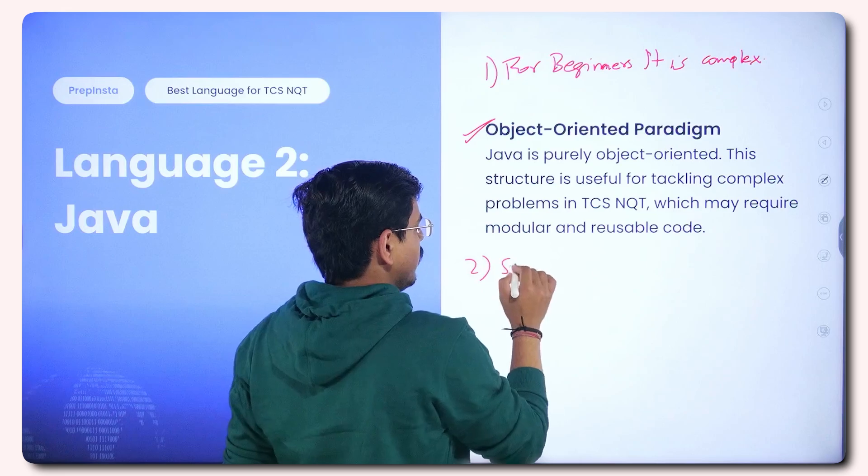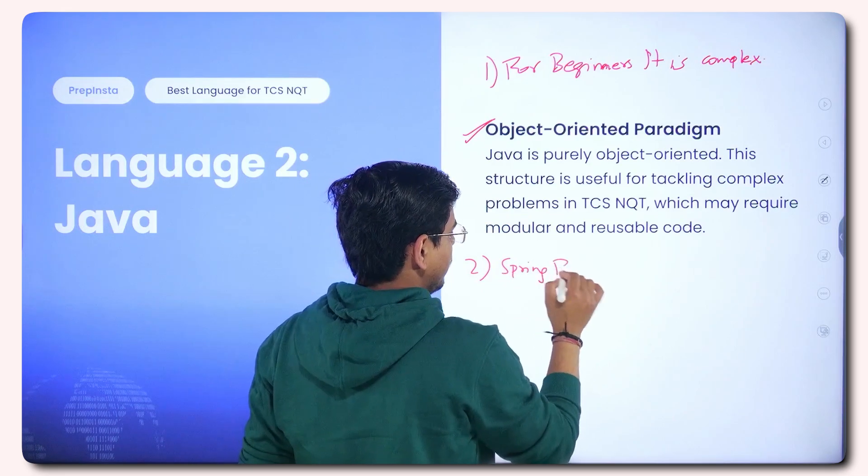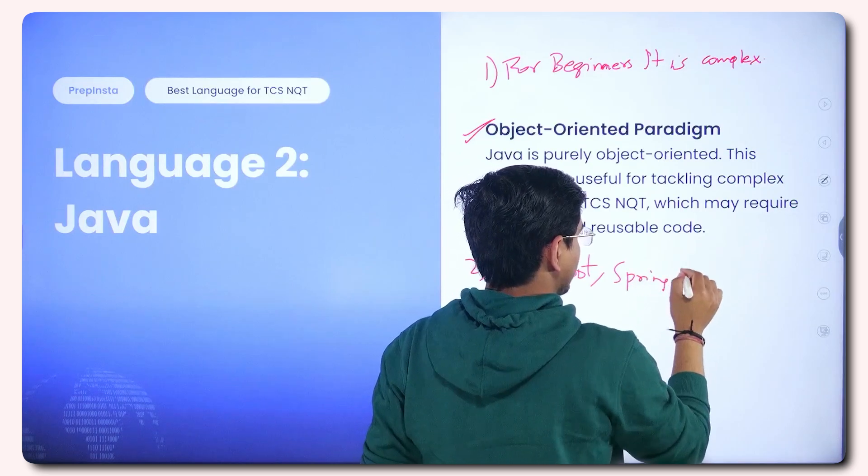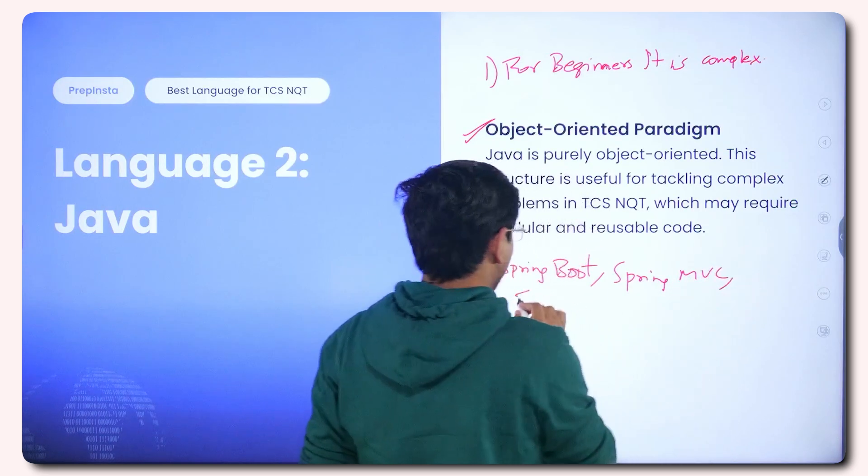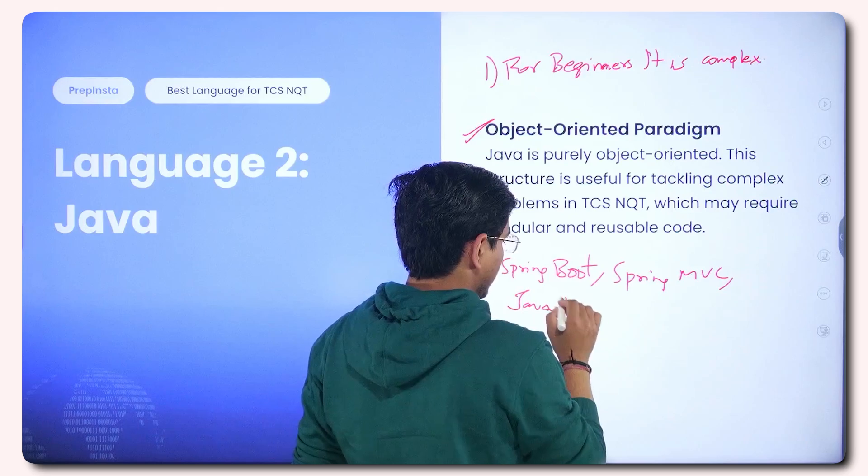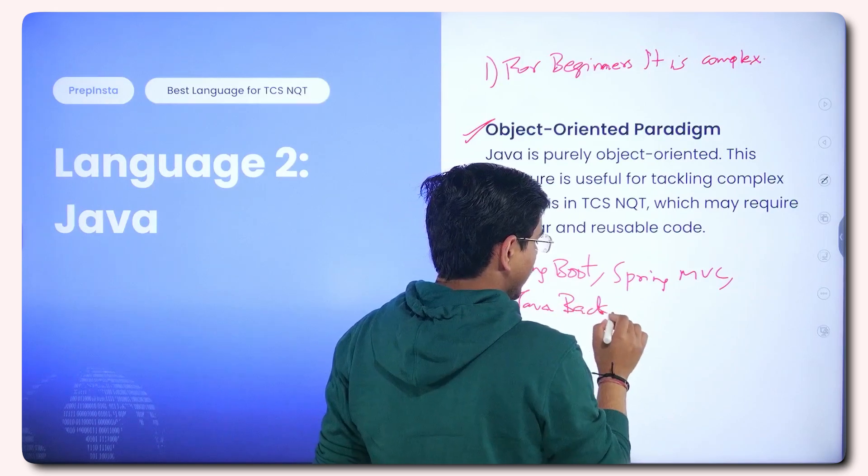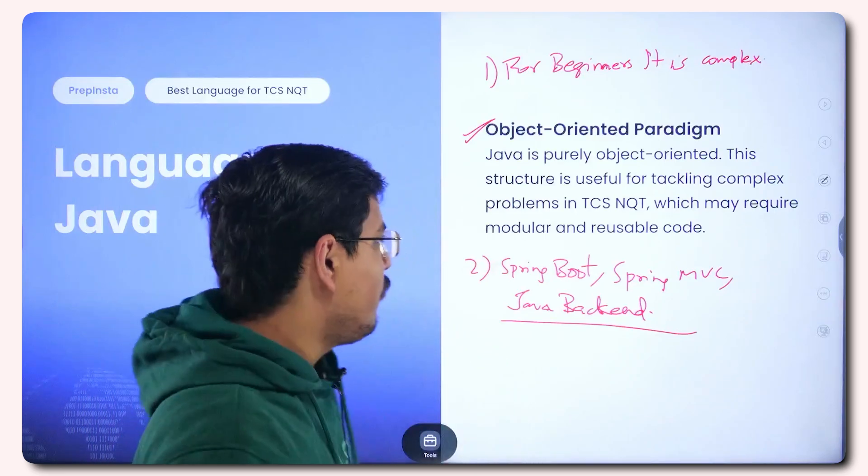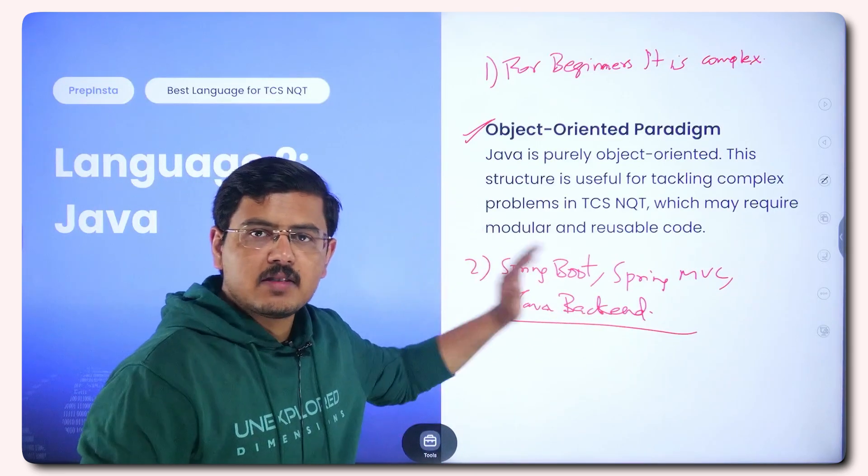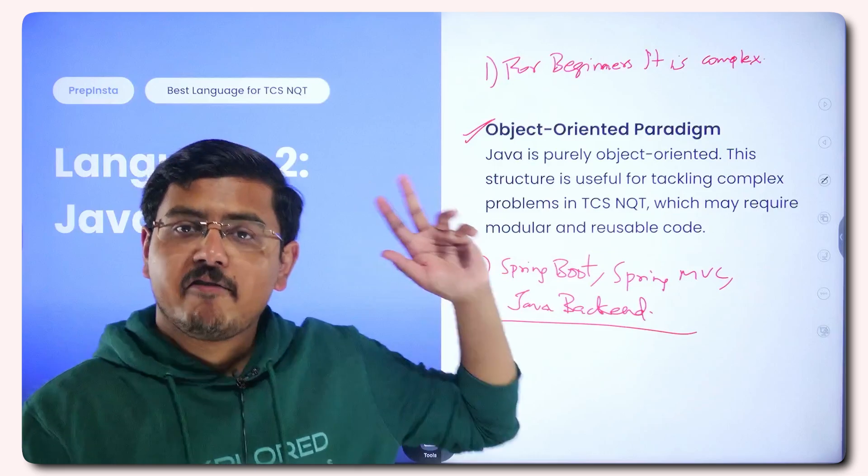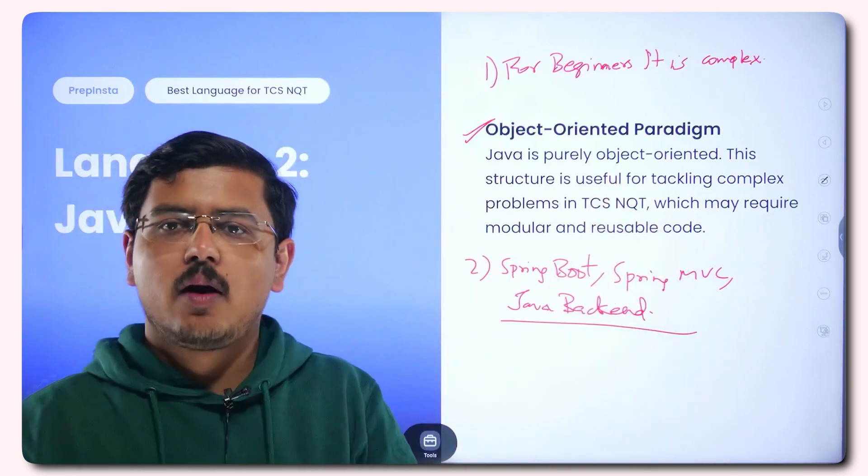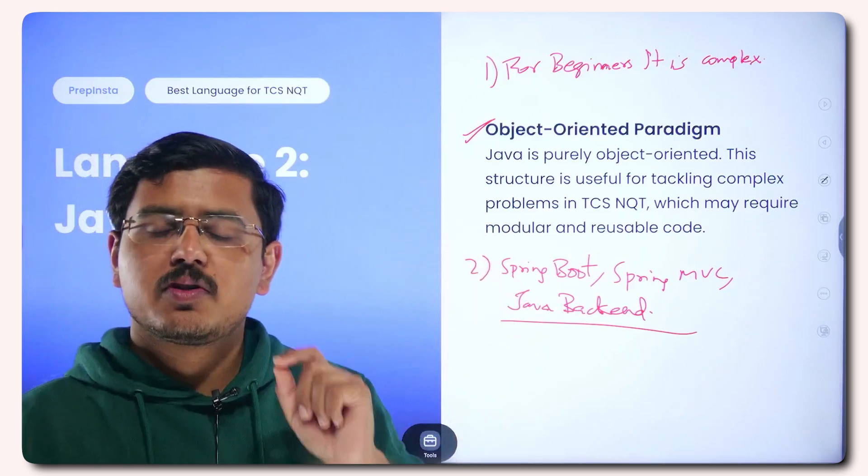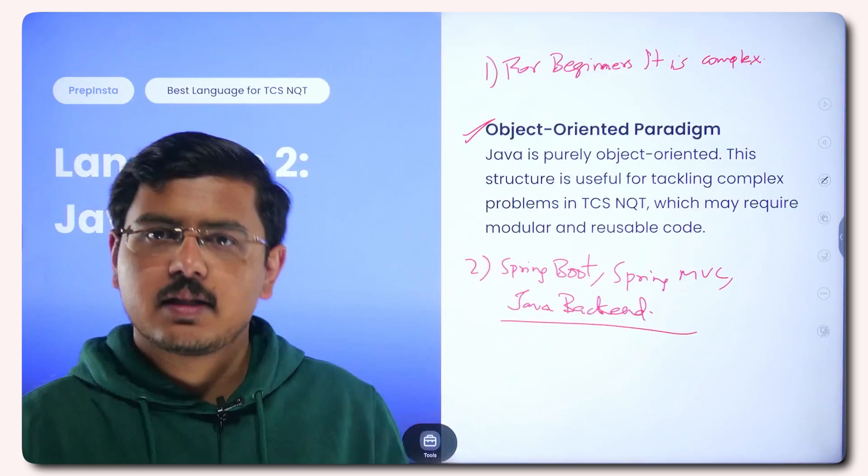Spring Boot, Spring MVC, Java backend, all those people who are targeting these particular skills, for them Java is wonderful, who have worked in these skills, who have decent exposure of these skills, who are very good in these skills, can take up Java as the language. Otherwise think twice before taking Java as a language because Java is a complex language, it is a tough language.